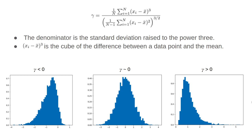The denominator normalizes by the spread of the data so that the number we get doesn't depend on the magnitude. For example, if we multiply every data value by 10, the skewness stays the same. This is unlike the mean or standard deviation, which increase if we multiply all the observations by a scaling factor. The final result is a quantity gamma, which measures the extent to which the probability distribution is skewed left or skewed right.